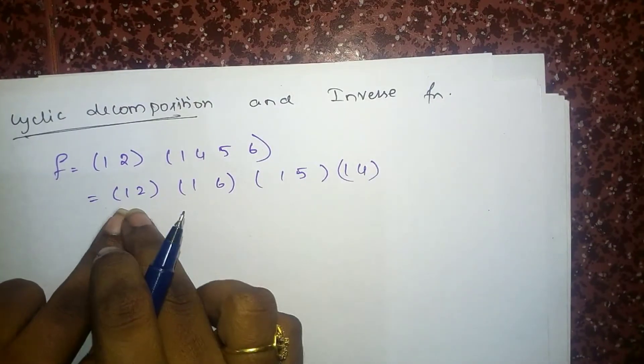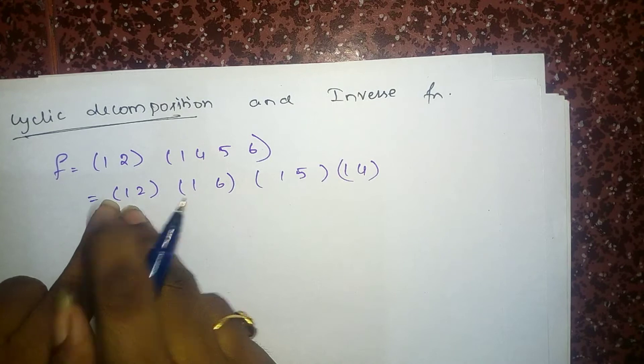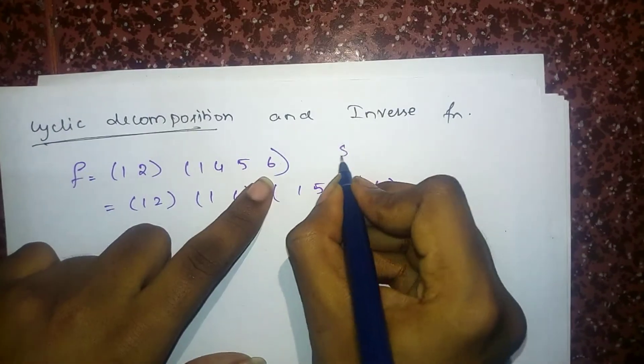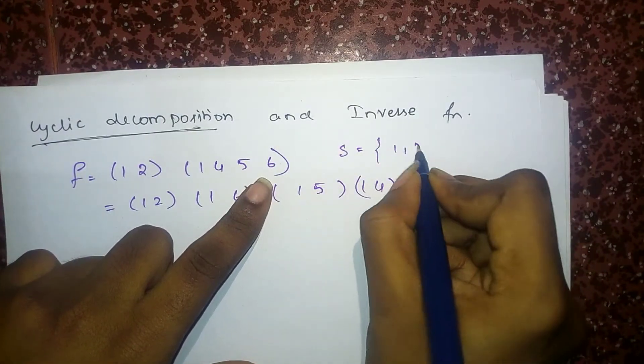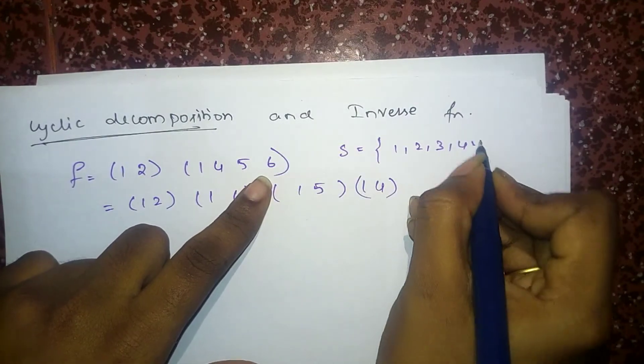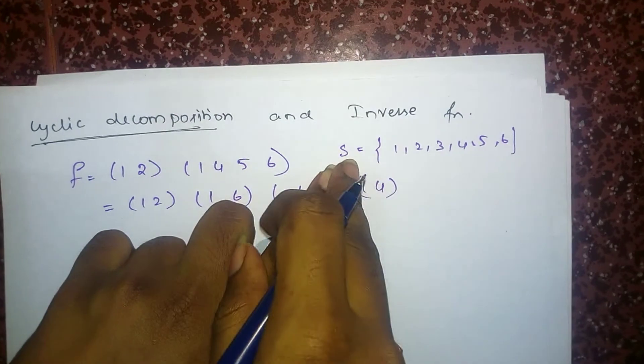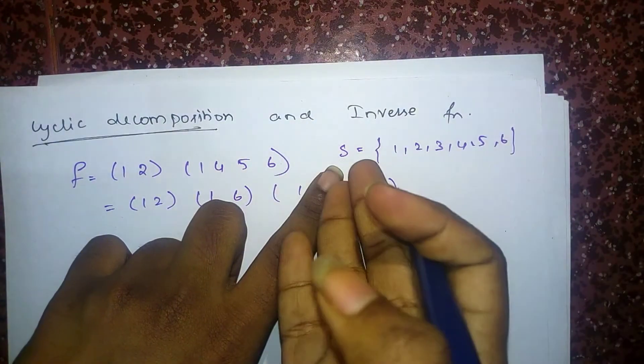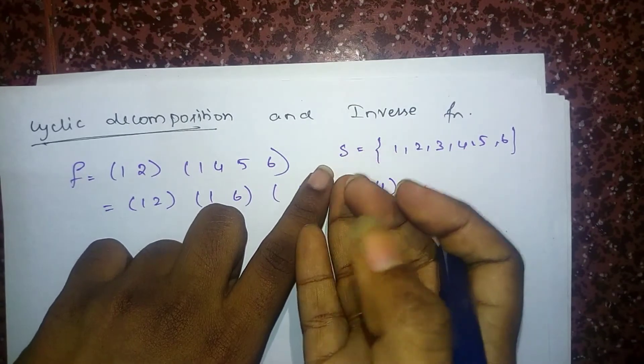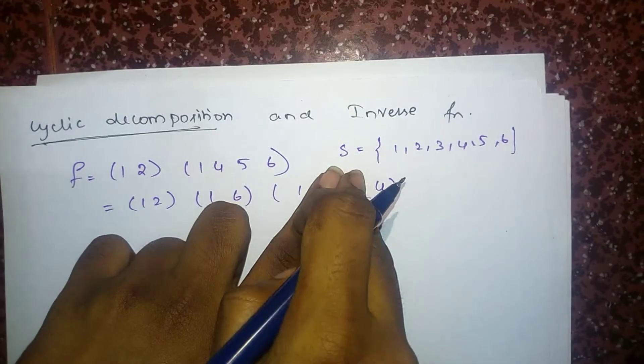And if you have seen this, there are up to 6 here. So S consists of 1, 2, 3, 4, 5, 6. It's the domain. You can see it is the set, yes, pre-image and image, both are 6.